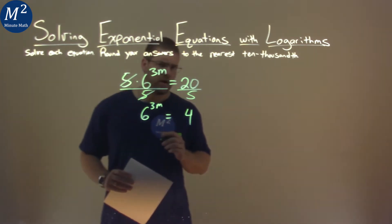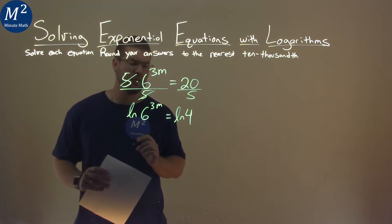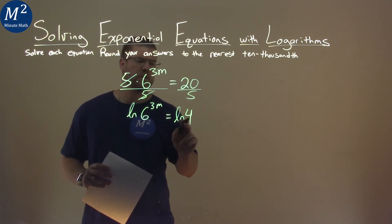Now, our rules of logarithms state that we can take the log of both sides. So we take the natural log of both sides to make it easier, and we have natural log of 6 to the 3m is equal to natural log of 4.